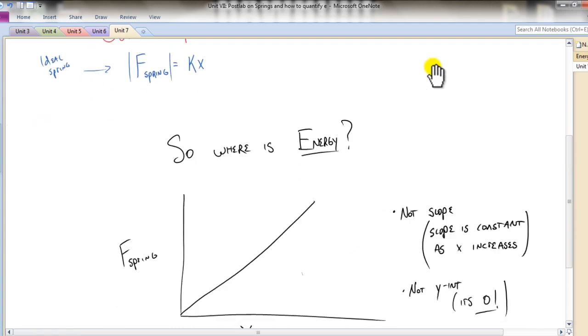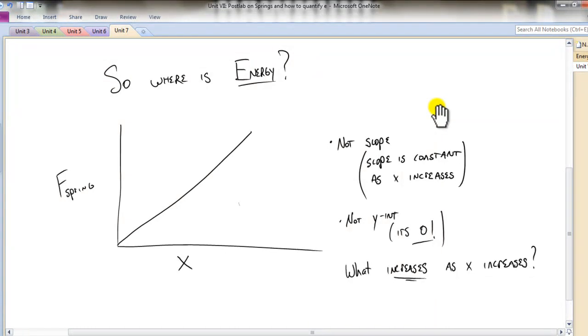So one of the other major pieces is we're looking at this graph and we know that the slope is not the energy. The reason why is as I increase delta x at each one of these given points, I should be putting more energy into the spring. Well, what happens to the slope at each one of those points? The slope stays the same because this is a straight line. So the slope is constant as x increases. So the slope is not energy.